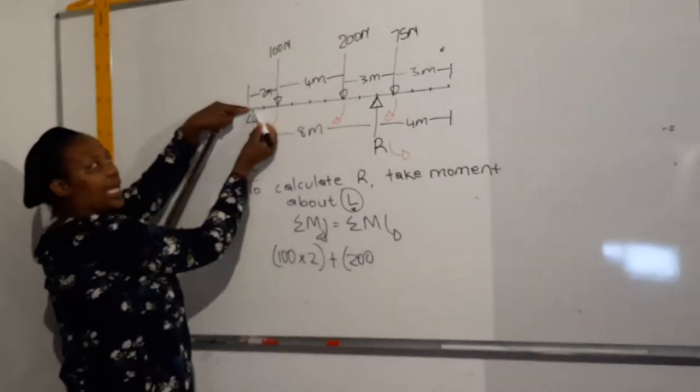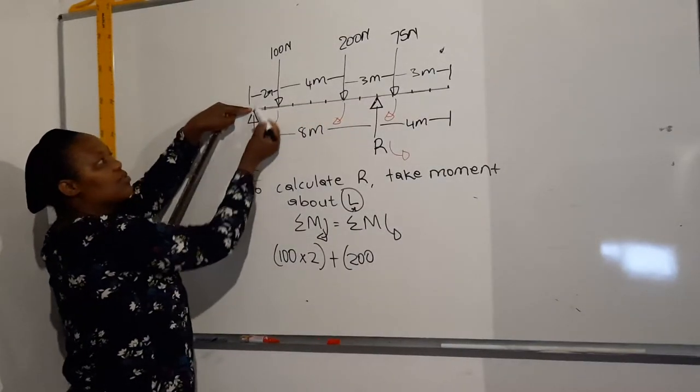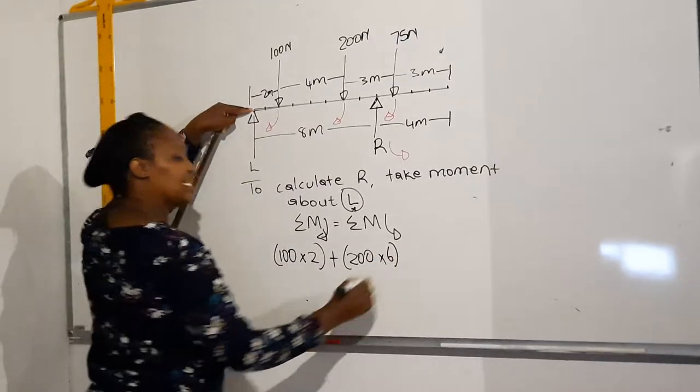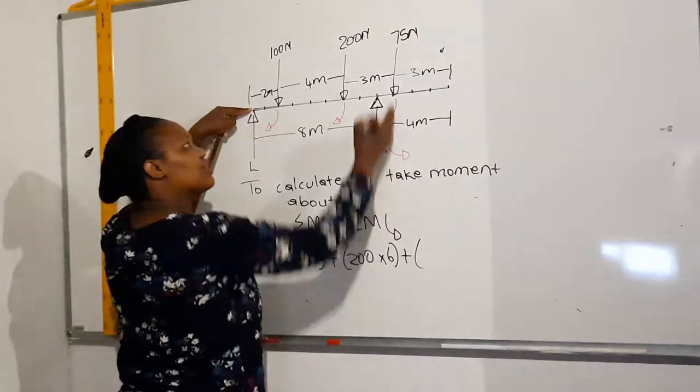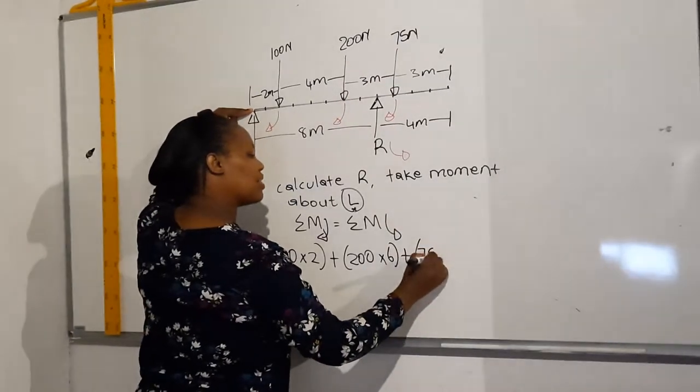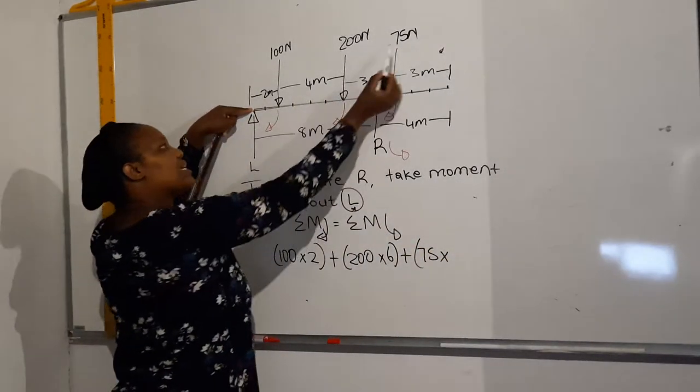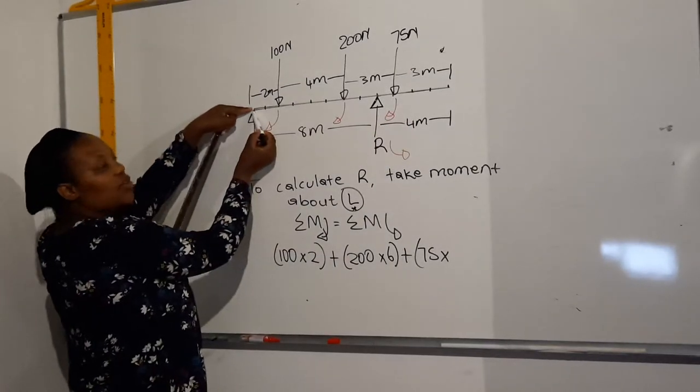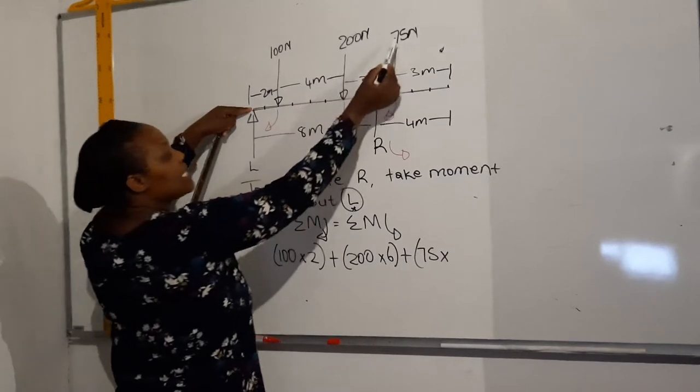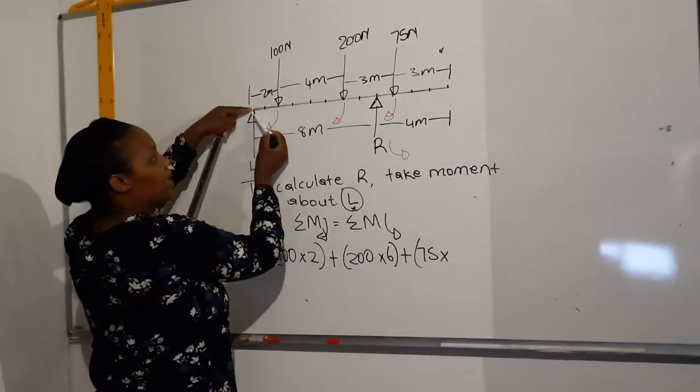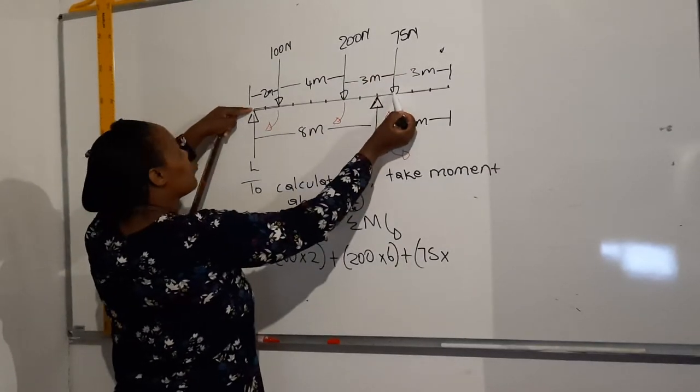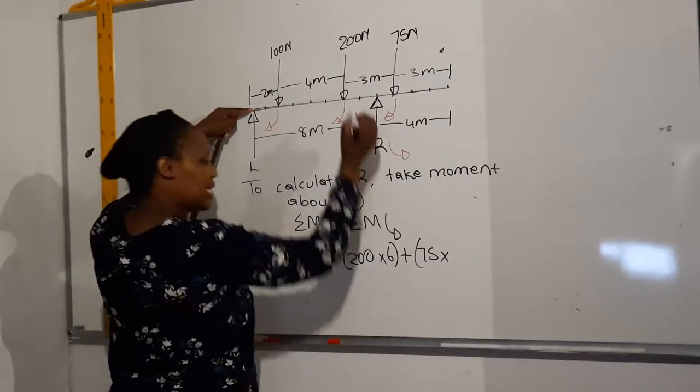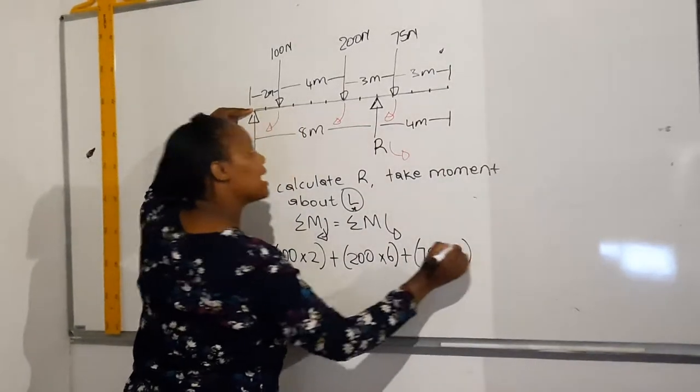Then the next one will be the moment of the 200 newton force. How far is the 200 newton force from the pivot, which is L? It's going to be 4 plus 2, which is 6, multiplied by 6. Then the next one will be the moment of the 75 newton force. Then you ask yourself, how far is the 75 newton force from L? So you reference all your forces by L. From 75 to L, your distance there is 4, 6, 7, 8, 9. So you multiply that by 9.